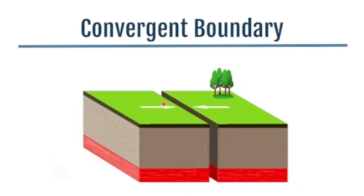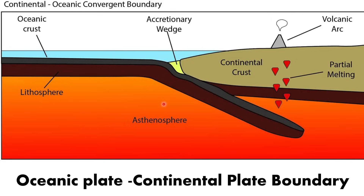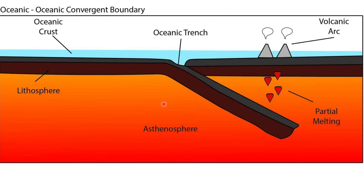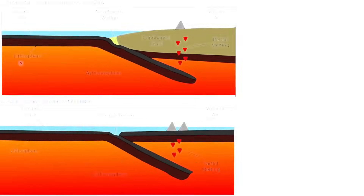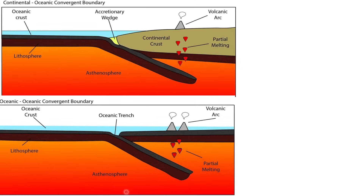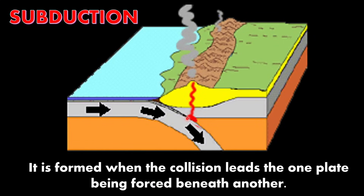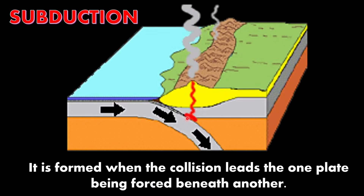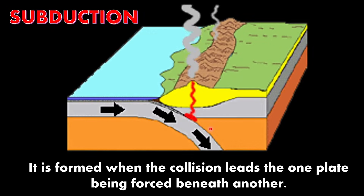Next, we have convergent boundary. It is formed when two plates move toward each other. This boundary has three types: oceanic-continental plate boundary, two oceanic plates boundary, and two continental plates boundary. In oceanic-continental and two oceanic plates boundaries, the oceanic plate bends downward into the mantle through a process called subduction. Subduction occurs when the collision leads one plate to be forced beneath another, and it can also cause the plates to crumble and fold, leading to the formation of mountain ridges.